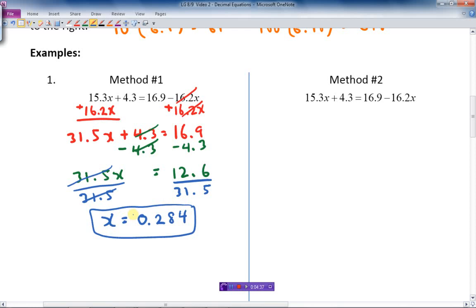The other side, we're going to do this one the way we talked about in note B, where we get rid of the decimals. So here I've got one decimal place on each of these numbers. I'm going to multiply every term here by 10. So 10 times the first one is 153x plus 43 equals 169 minus 162x. So I've got no decimals to worry about. Let's bring all the x's to the same side.